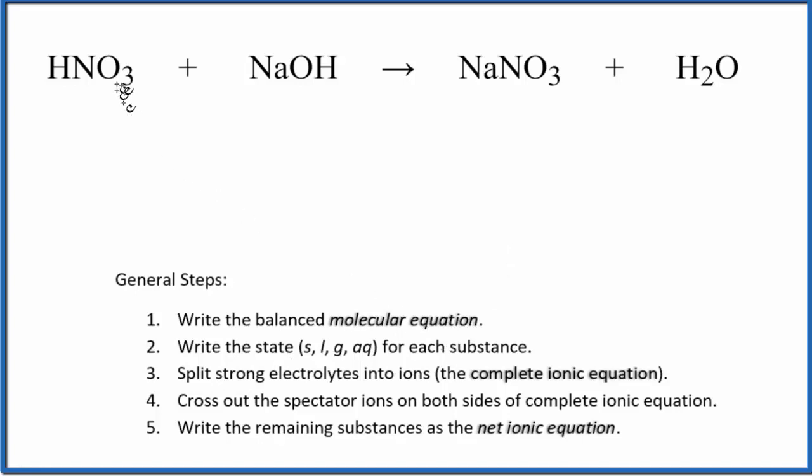Then we write the state. HNO3, that's a strong acid. When it's in water, it's going to dissociate completely, strong electrolyte, so we're going to write AQ for aqueous. It's dissociated, dissolved in water. Sodium hydroxide is a strong base, so it will also dissociate completely, so we're going to write an AQ after that.